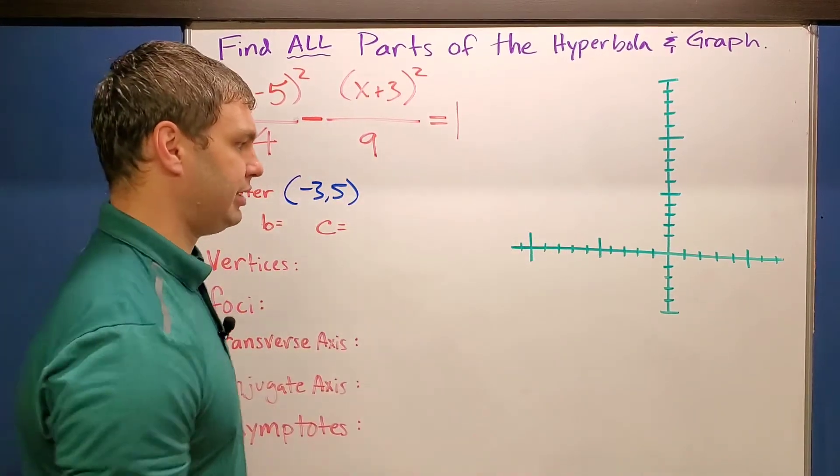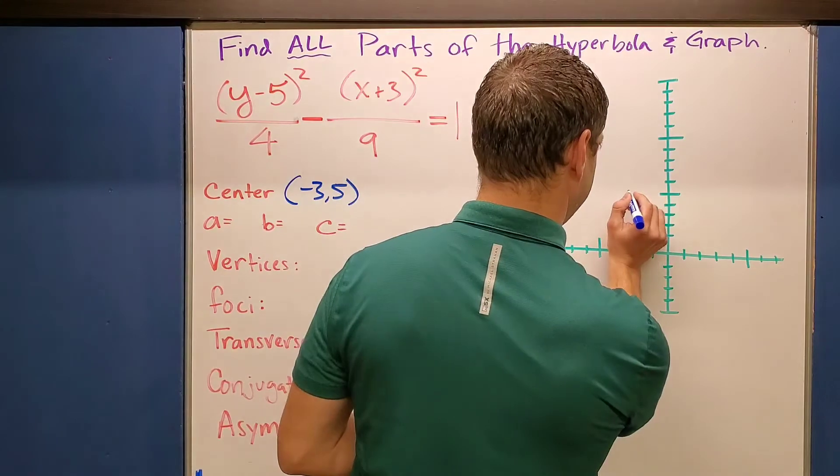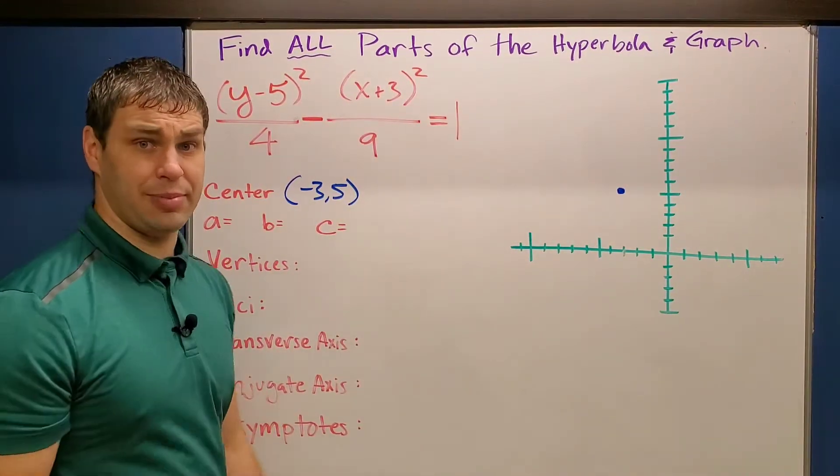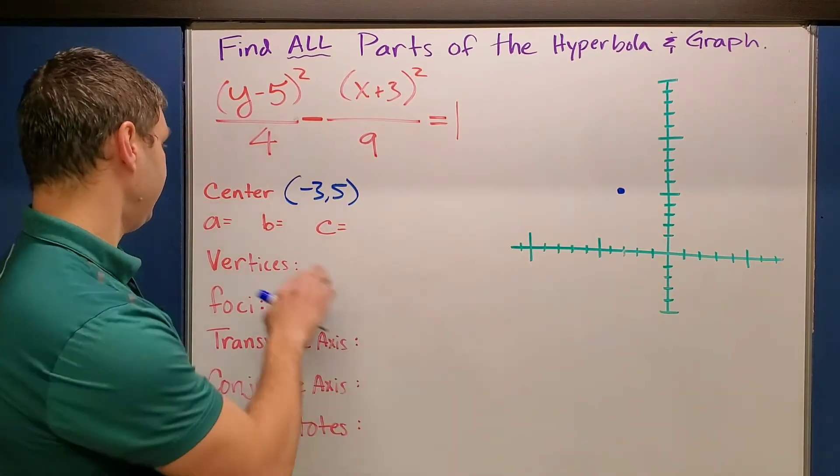And as we do this, I'm just going to kind of graph it as I go. So negative 3, positive 5 is about right here on my graph. Again, my graph is probably not going to be perfect. If you have graph paper, it'll probably look a lot better than mine.